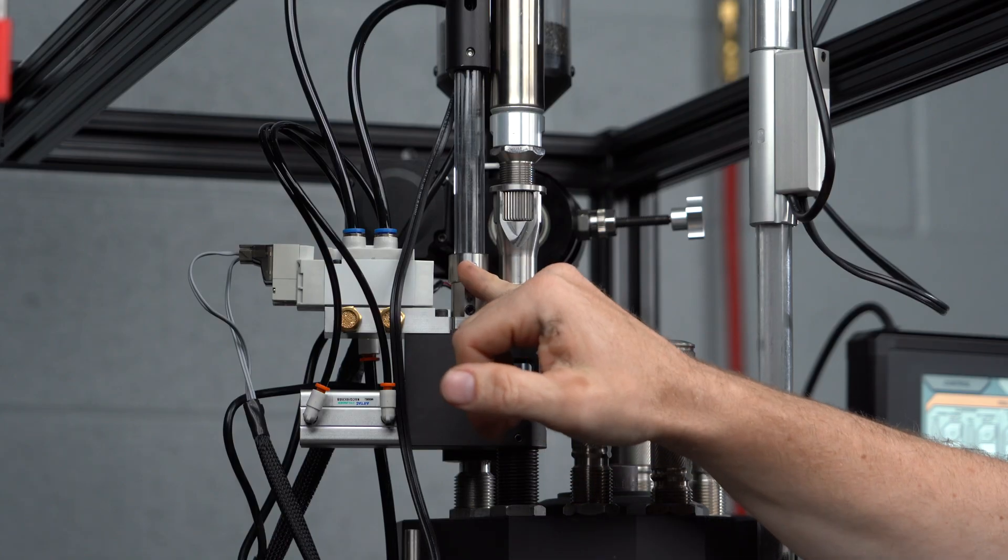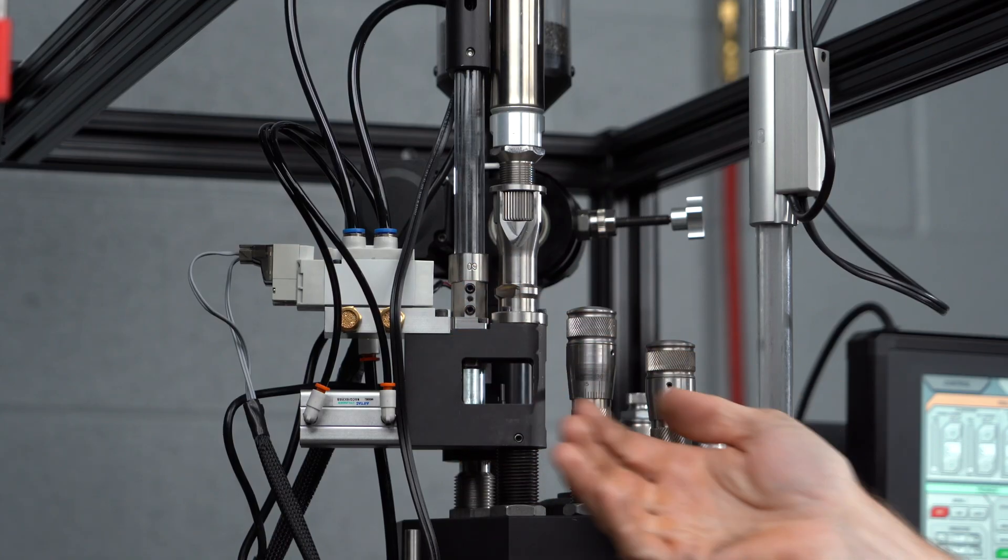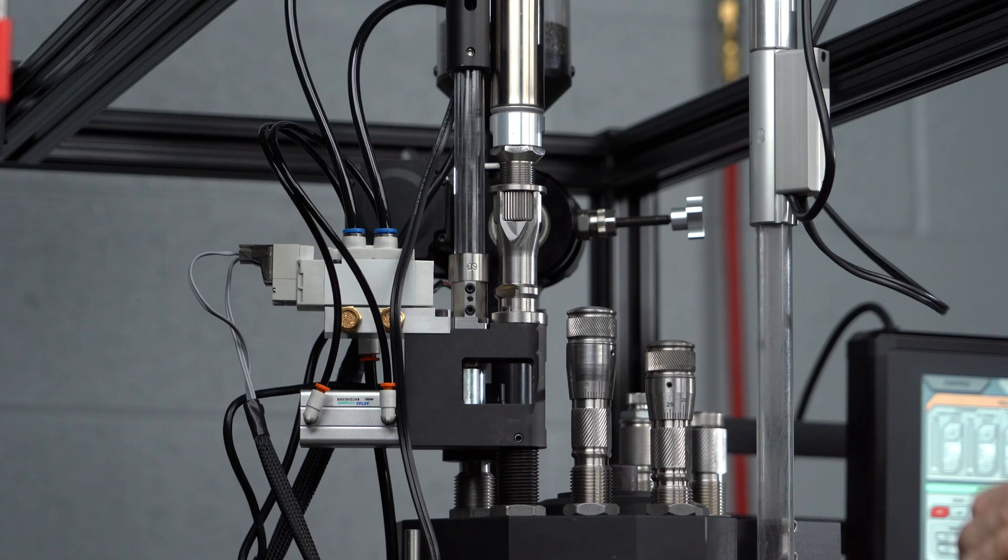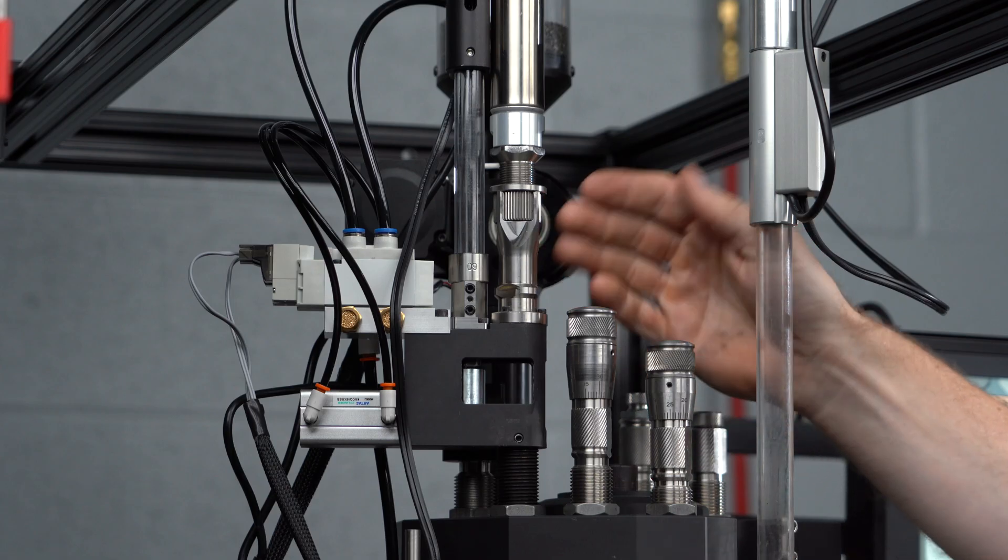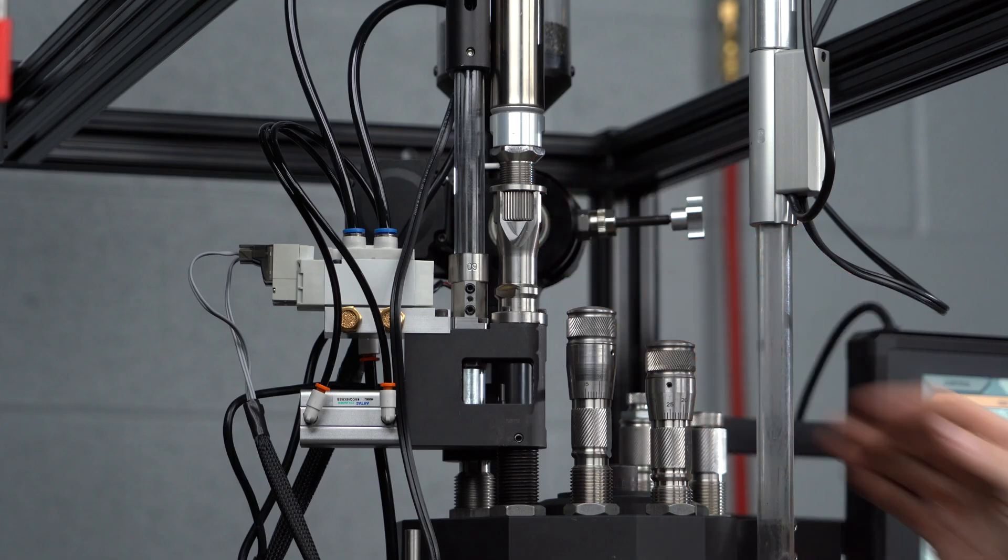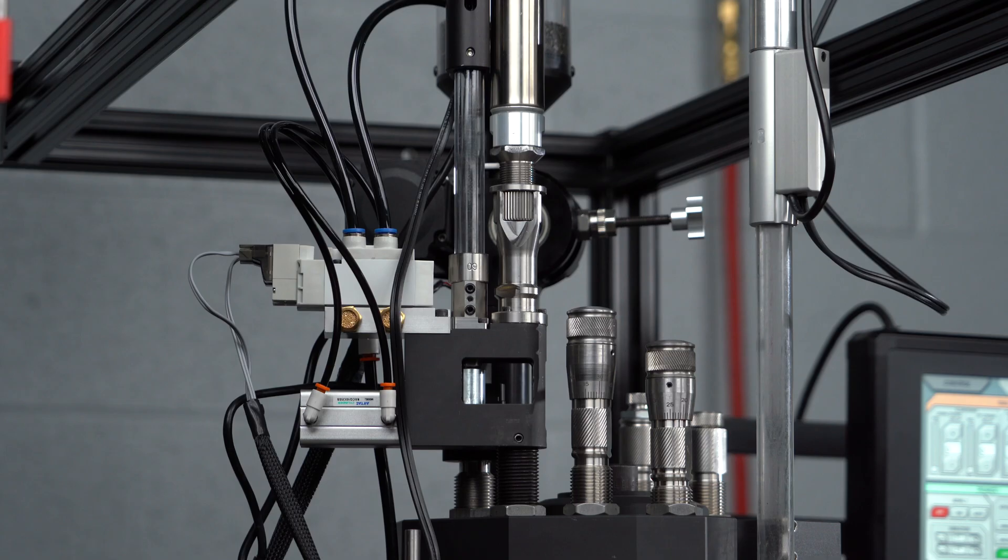Now that we've set our gate, we know the ram moves back and forth freely and allows the projectile to move. We can now tune our pre-seat depth with these 338 Lapua Magnum projectiles and case. Let's do that now.